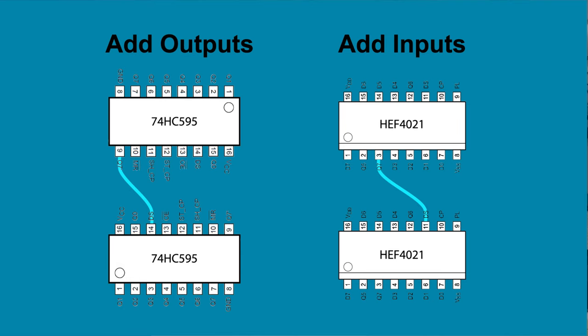One thing that's cool about shift registers is you can run multiple — for example, 8-bit shift registers — in series by connecting the Q7 serial output of one to the DS serial input of another. So you can keep stacking them to add more and more I/O. Pretty handy.